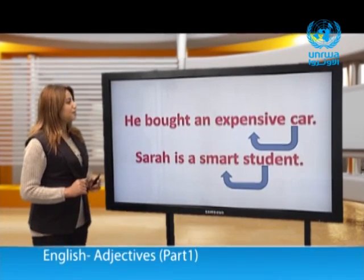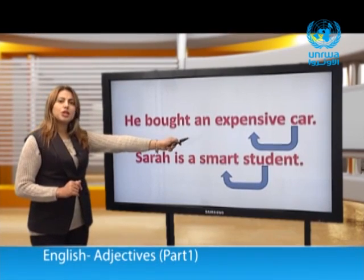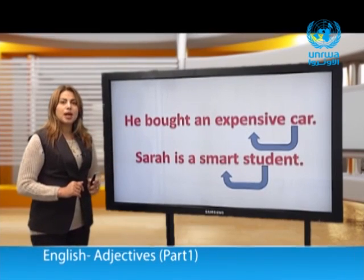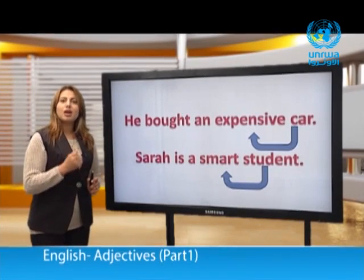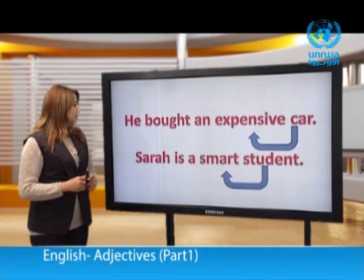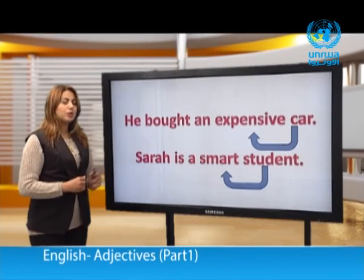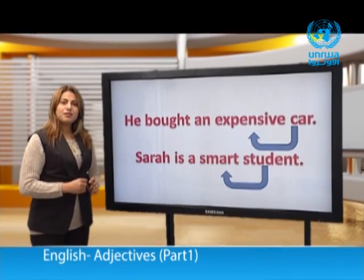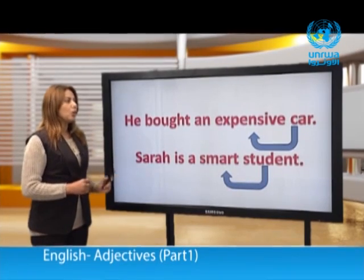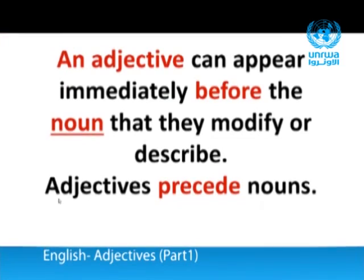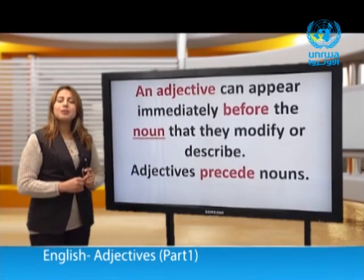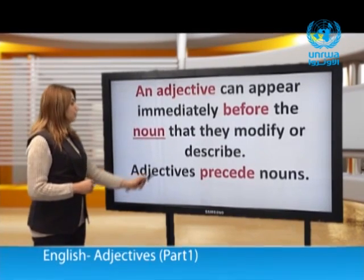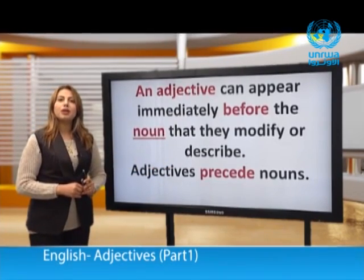He bought an expensive car. The adjective came before the noun. 'Car' is a noun, 'expensive' is an adjective — 'an expensive car.' In the second example, 'Sarah is a smart student' — 'smart' came before the noun. An adjective can appear immediately before the noun that it modifies or describes. Adjectives precede nouns.